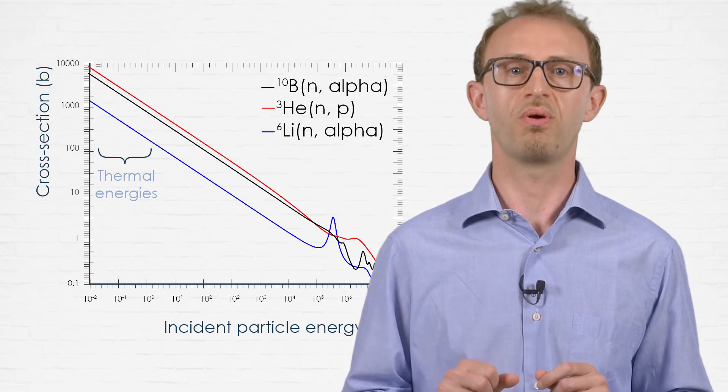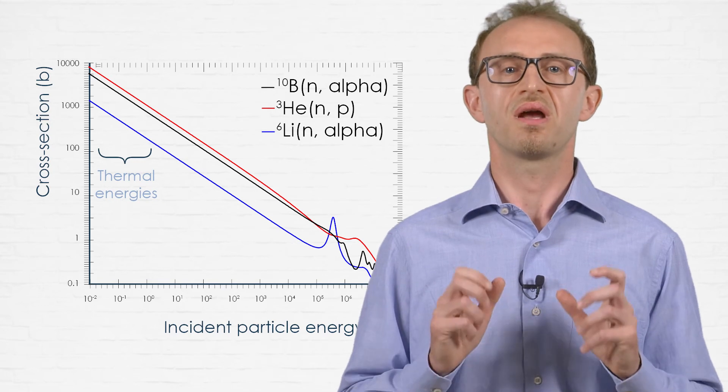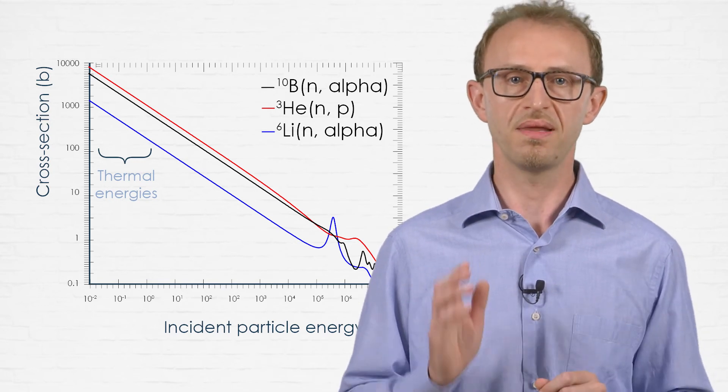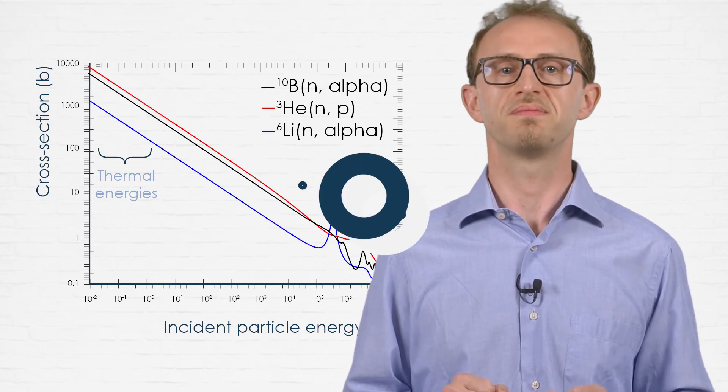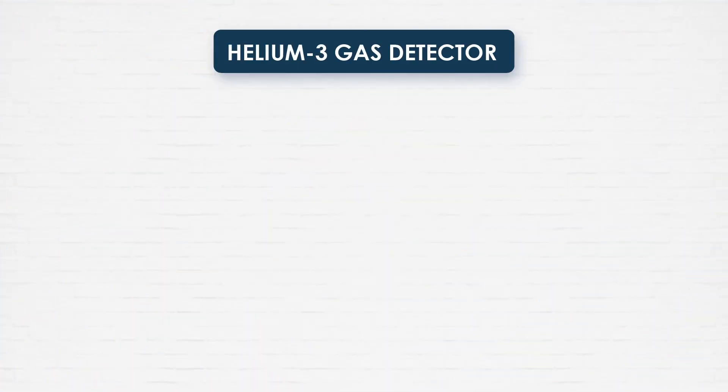while the nucleus helium-3 has a high cross-section for the N-P reaction. This is the reason why thermal neutron detectors are instruments that exploit typically materials containing boron-10, lithium-6 or helium-3. An important example is given by helium-3 gas detectors. These are cylindrical or spherical chambers filled with helium-3 gas enriched with helium-3.